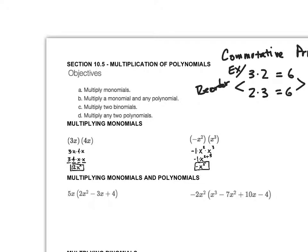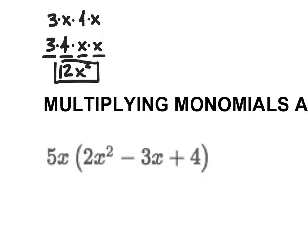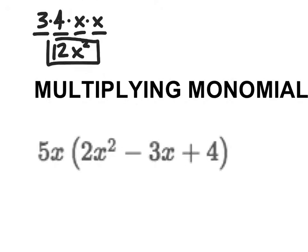Reordering is a really important technique. Now the next thing is multiplying a monomial — a one-term polynomial — by any polynomial. We're going to use the distributive property. I have five x times this whole quantity, so I have to distribute the five x into each term of my polynomial.